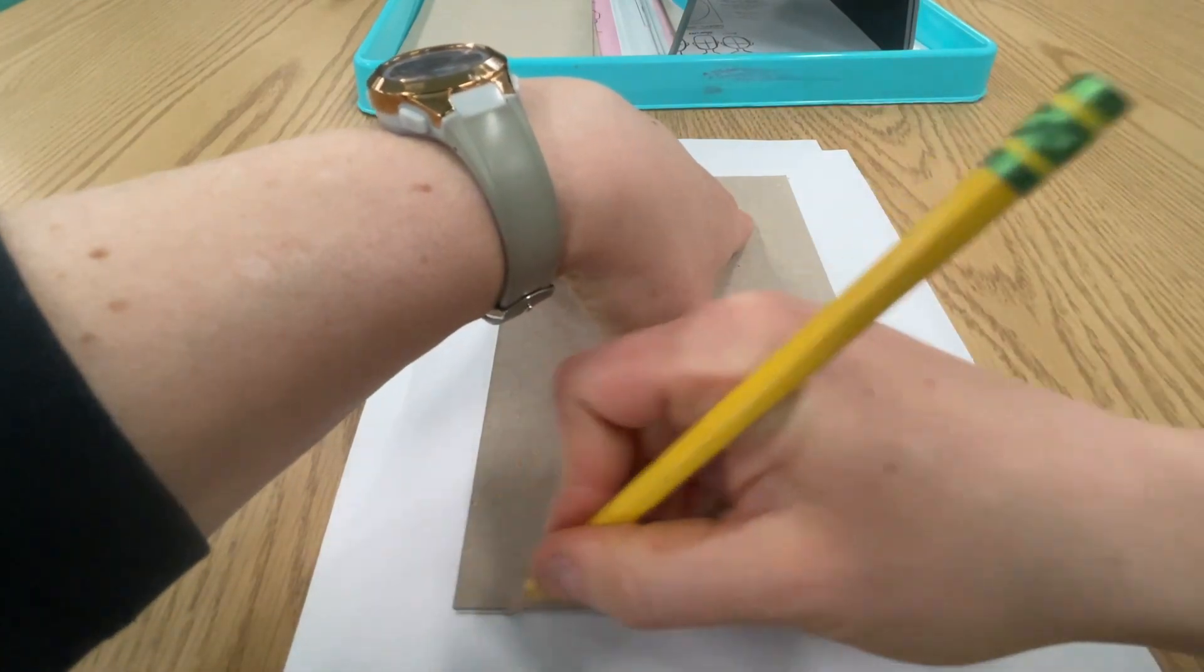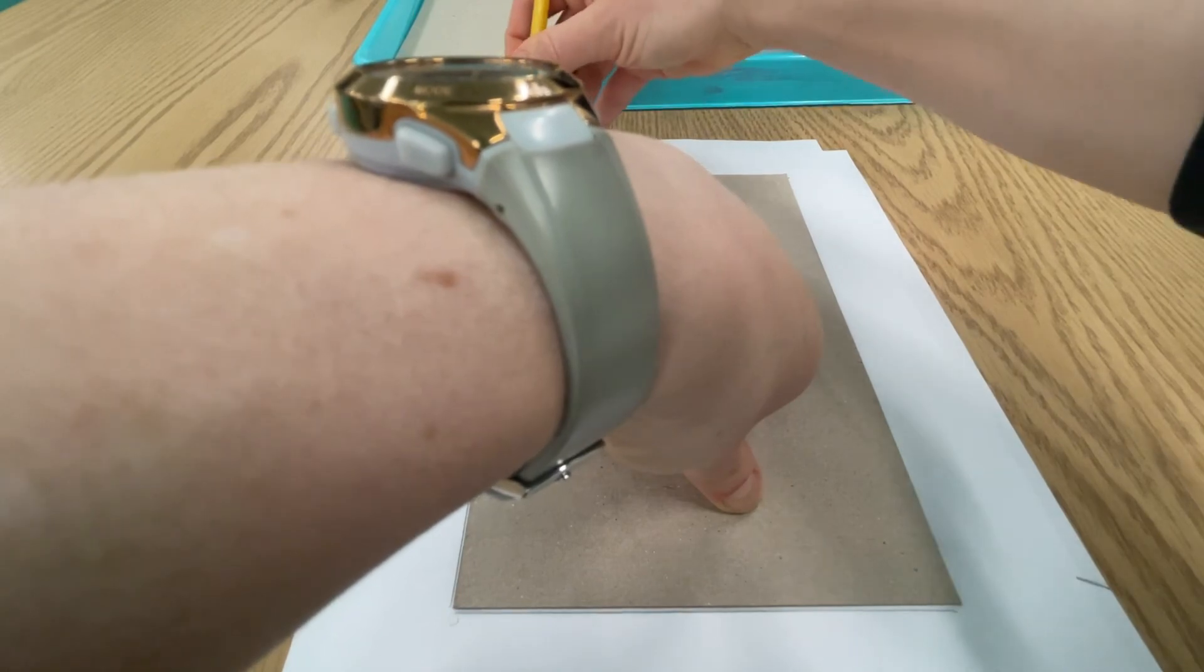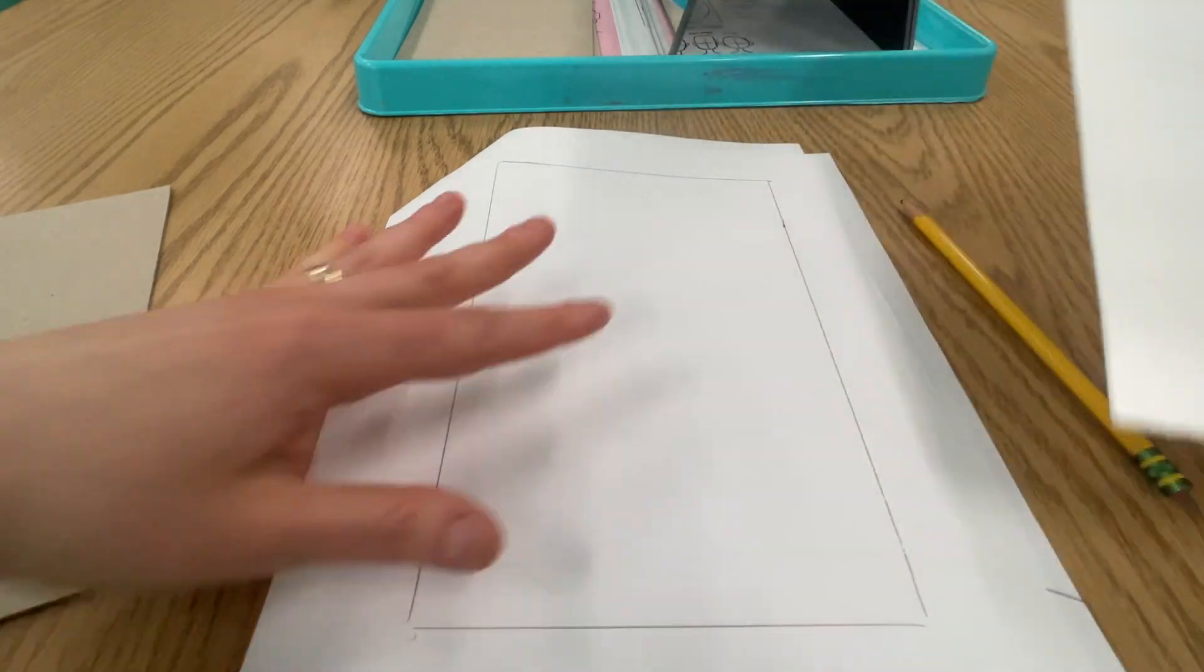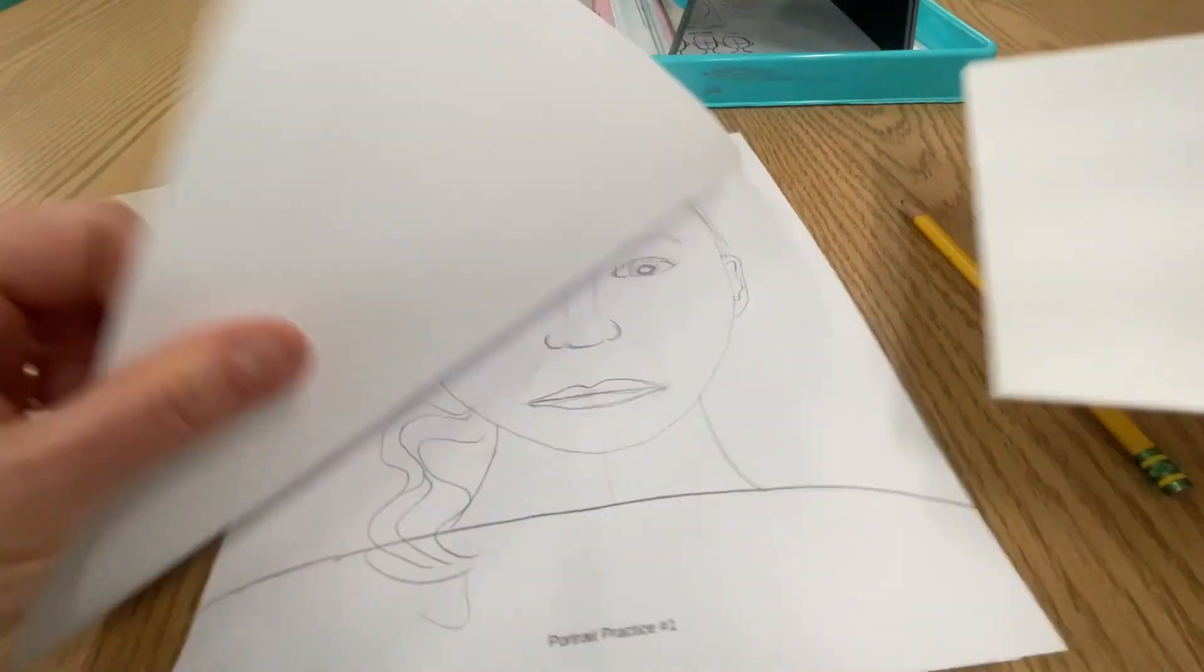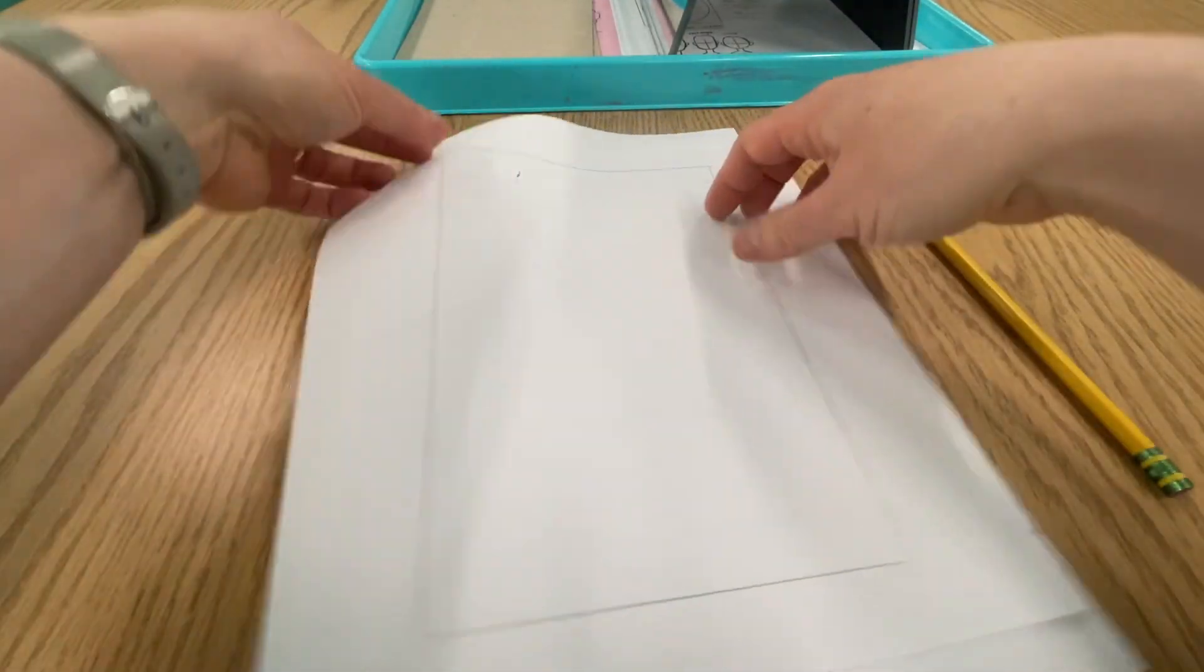The reason we are tracing this particular sized rectangle stencil is because this is the exact measurement of the styrofoam printing plate that I'm going to give you. So once you finish your sketch, we are going to be able to tape this to the back and then you'll trace over it with colored pencil and it will transfer the design. Okay, so take care of that, two rectangles, one, two.